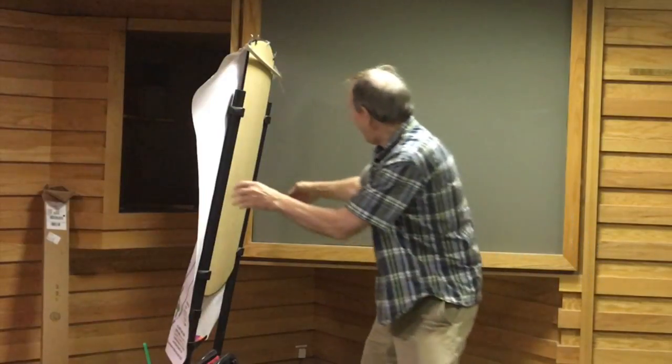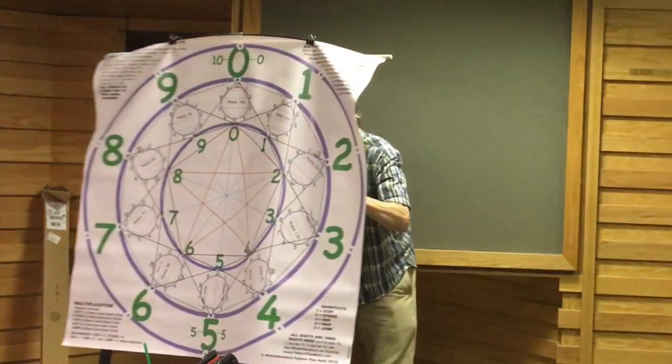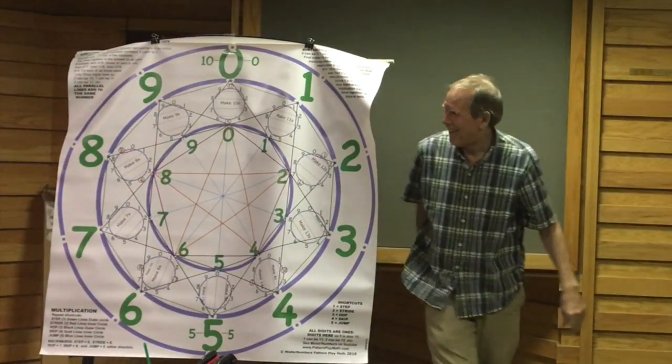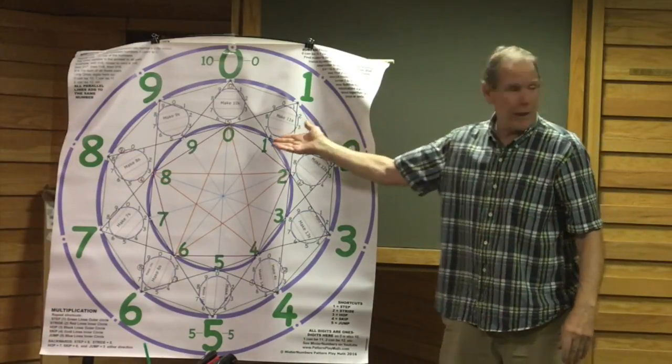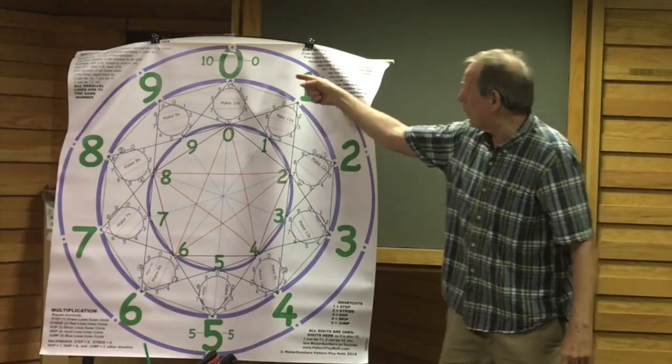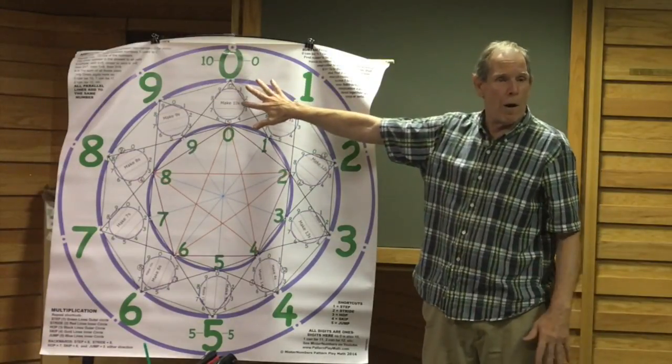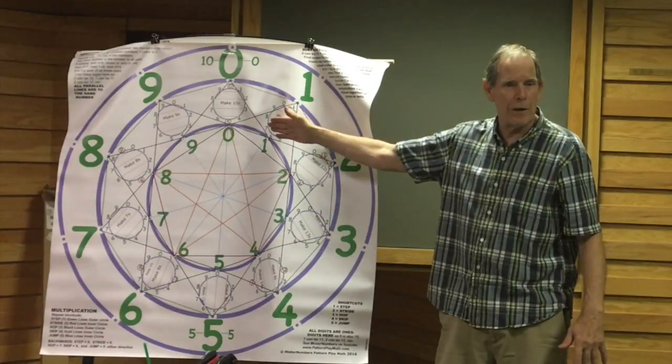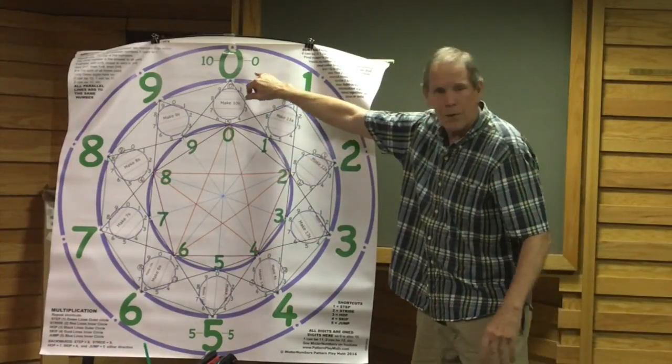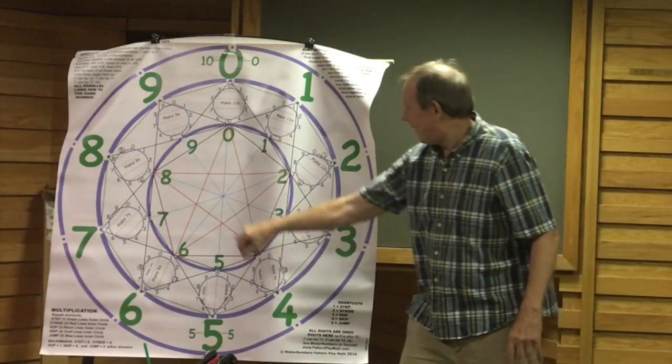And I happen to have a play thing, something for kids to play with. Kids literally, this doesn't go on a wall, it goes on the floor, it's just easier for you to see here. So kids get on 0, and they go around, and they go to 10.